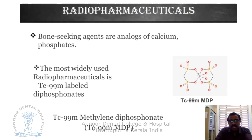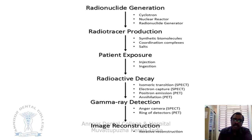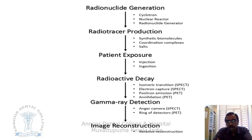Radiopharmaceuticals are basically bone-seeking analogs of calcium phosphates. The most commonly used radiopharmaceutical is Technetium-99, also called Technetium-99m. The radionuclide generator is produced by a cyclotron or a nuclear reactor. Radiotracer production involves complexes with synthetic biomolecules or salts. The patient is then exposed to these radionuclides by administration — typically an injection or IV — and the tracer begins circulating in the body.